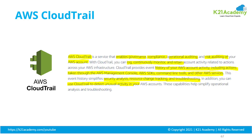CloudTrail is your auditing service — it basically tracks who did what and when. For example, if you modify, delete, or someone changes a configuration, it will track all of this. CloudTrail is an auditing system which enables governance, compliance, auditing, and risk auditing of your AWS account. It constantly tracks logs, monitors the system, and retains all the data in the audit event log system.